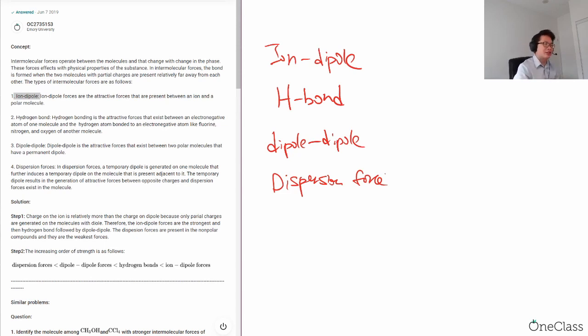First of all for this question, I would say that we are looking at the general trend. Because sometimes if you change the condition a little bit, this order may not be correct. But we are not going to pay attention to that specific example. We are going to look at the general trend.